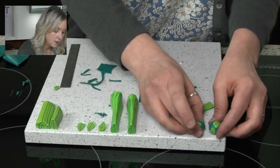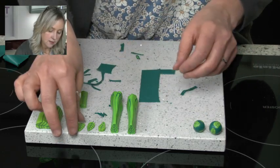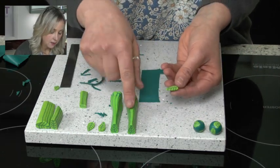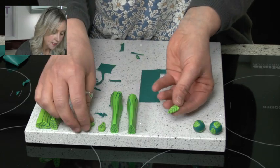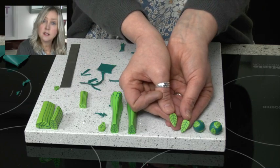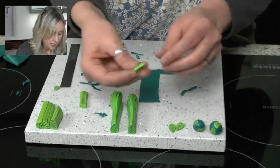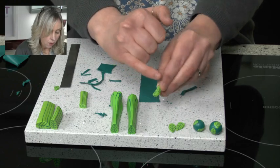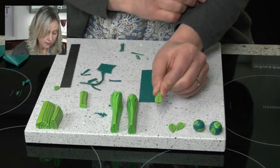So there you have beads. I will just show you something else that you can do with the canes. You can make bigger slices and you can use those for earrings, or you can just take a slice and pop a hole through there and you just have a leaf bead.